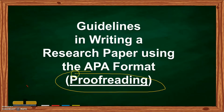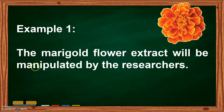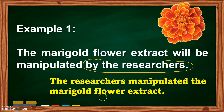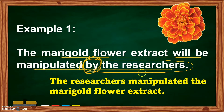Let us have the proofreading. For example: 'The marigold flower extract will be manipulated by the researchers.' If your answer is 'by the researchers,' very good. So it should be written this way: 'The researchers manipulated the marigold flower extract.' You should avoid using the word 'by' because it is not appropriate when you are writing a research paper. Instead of saying 'the marigold flower extract will be manipulated by the researchers,' it should be 'the researchers manipulated the marigold flower extract.' This sentence is wrong.